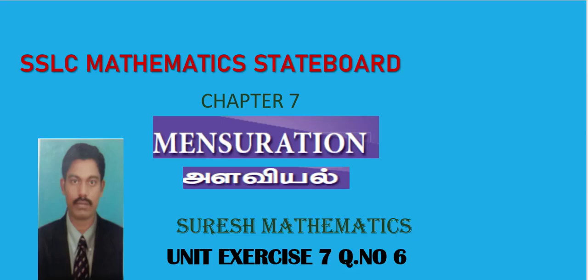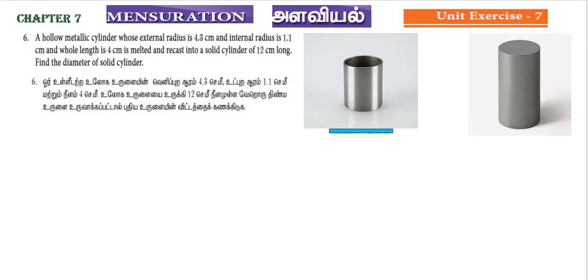Hi students, SLC Mathematics Chapter 7 Mensuration, Unit XA7, Question No. 6. A hollow metallic cylinder whose external radius is 4.3 cm and internal radius is 1.1 cm and whose length is 4 cm is melted and recast into a solid cylinder of 12 cm long. Find the diameter of the solid cylinder.